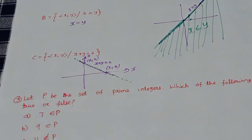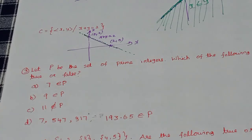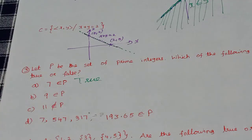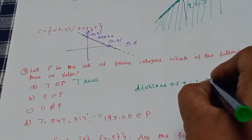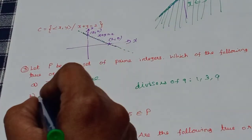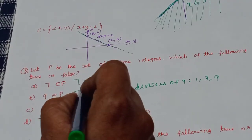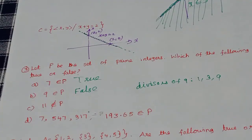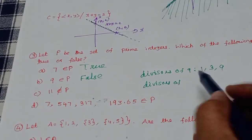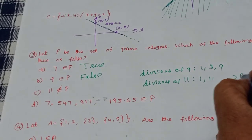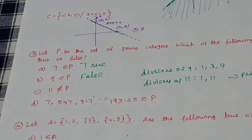Let P be the set of prime integers. A prime number has only divisors 1 and itself. True or false: 7 belongs to P — 7 is prime (divisors: 1 and 7), so this is true. 9 belongs to P — 9 is not prime because divisors of 9 are 1, 3, and 9, so this is false. 11 does not belong to P — but 11 is prime (divisors: 1 and 11), so this is false.